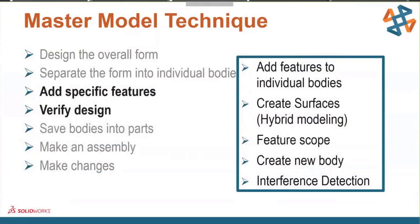Now we're going to further develop the design and add some features using regular SOLIDWORKS features as well as surfaces to add design details — again using hybrid modeling techniques. We'll specify which bodies to apply a feature to using the Feature Scope, create a new body for the keypad, and then verify the design.